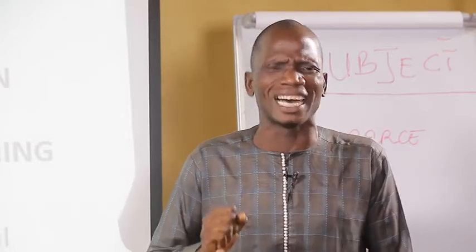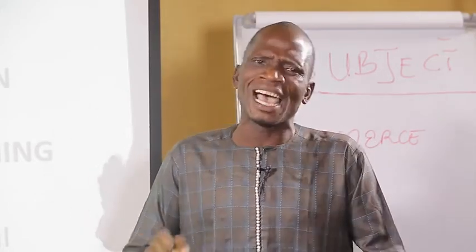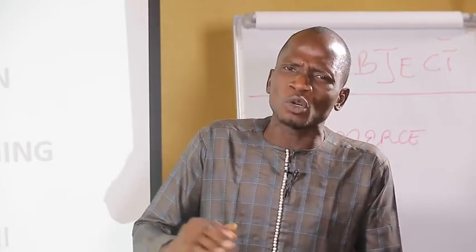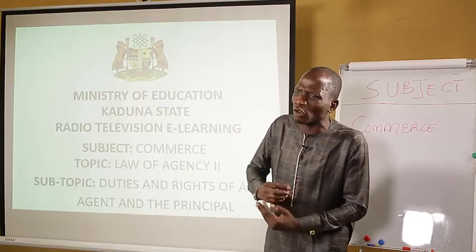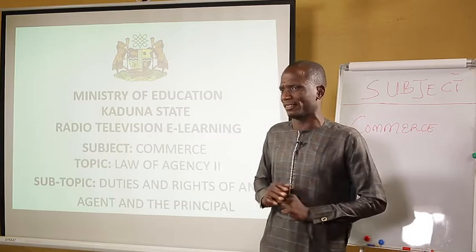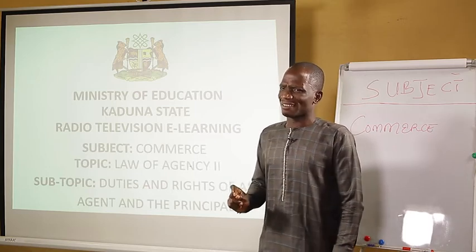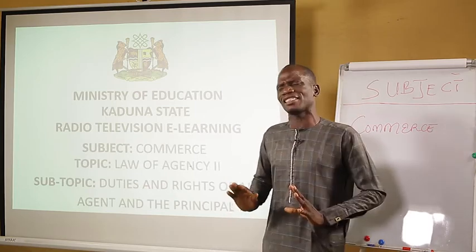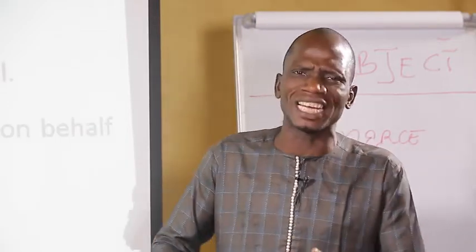In our previous lesson we treated business law. By definition, we said that business laws are the laws that regulate the operation of business or commercial activities. Under that lesson we also looked at the branches of business law, in which one was law of contract, and the second one is the law of agency, which we are still treating. Having known the meaning of an agent and the principal, today we are going to look at the duties and rights of an agent and the principal.